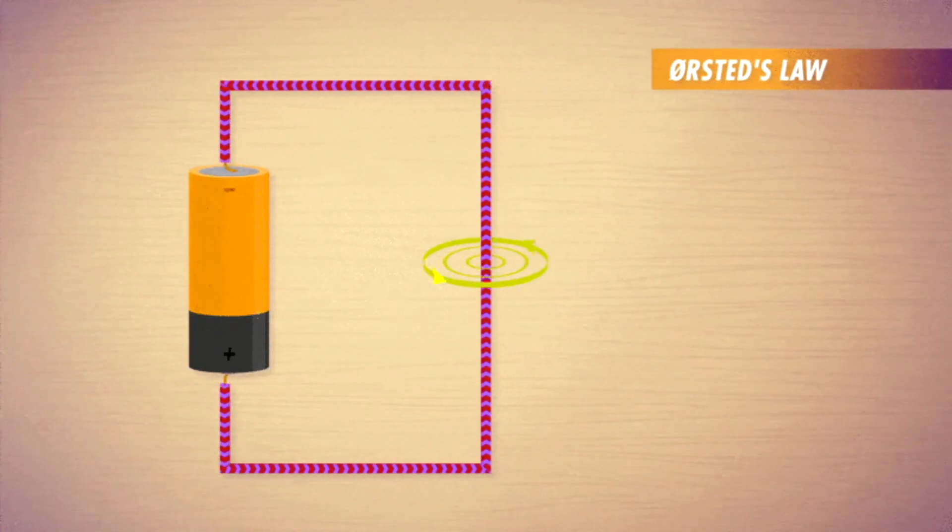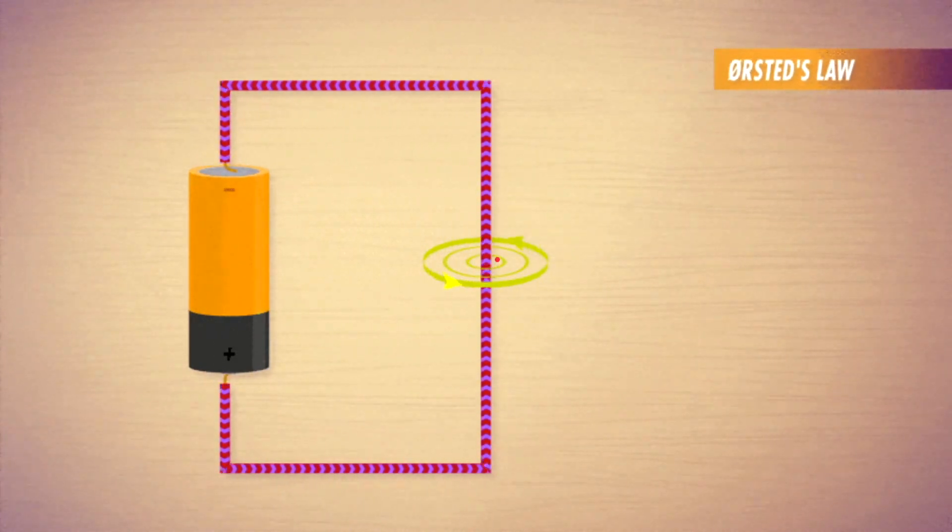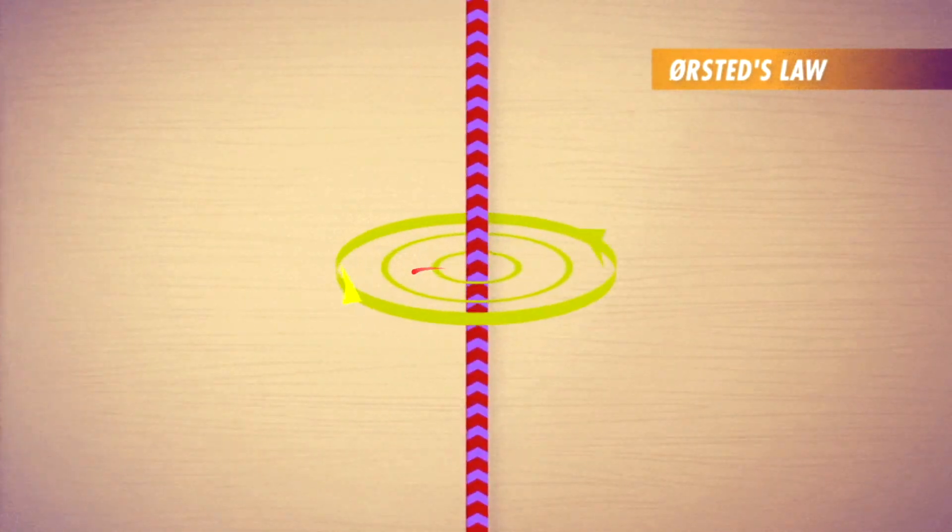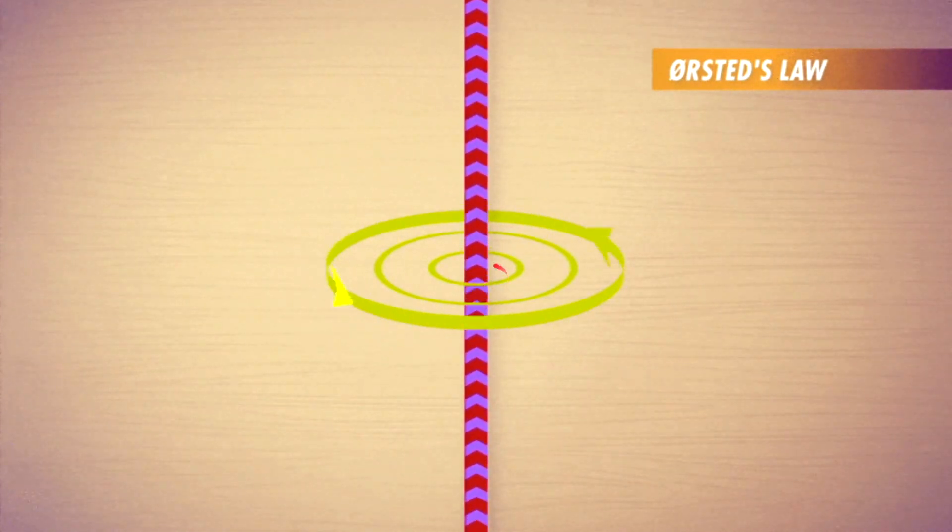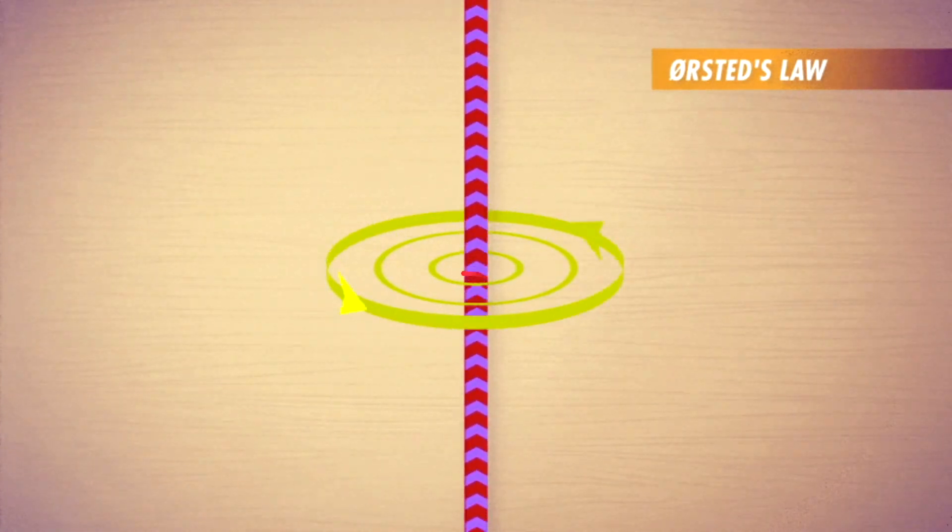After a few months of experimenting, Ørsted figured out that when a current runs through a wire, the magnetic field that it produces surrounds the wire. Expressed with field lines, the magnetic field would appear as circles with the wire at their center.